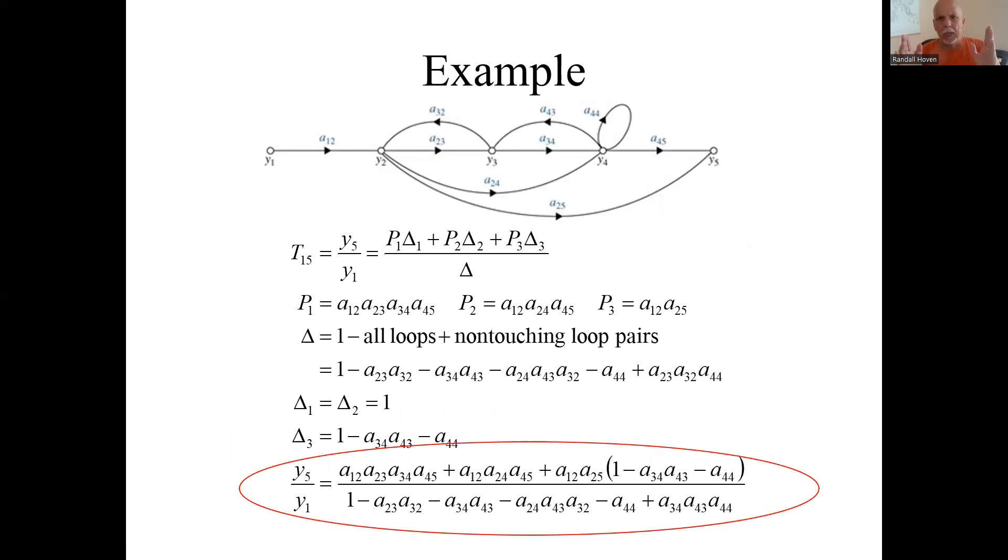Now, how do we apply Mason's formula? Here's what it is. Here's the transfer function. In our case, that sum in the numerator, we had three paths. We have this sum of three things. And what is the delta? It's going to be one minus the sum of all the loops. And there's four of them. One, two, three, four.